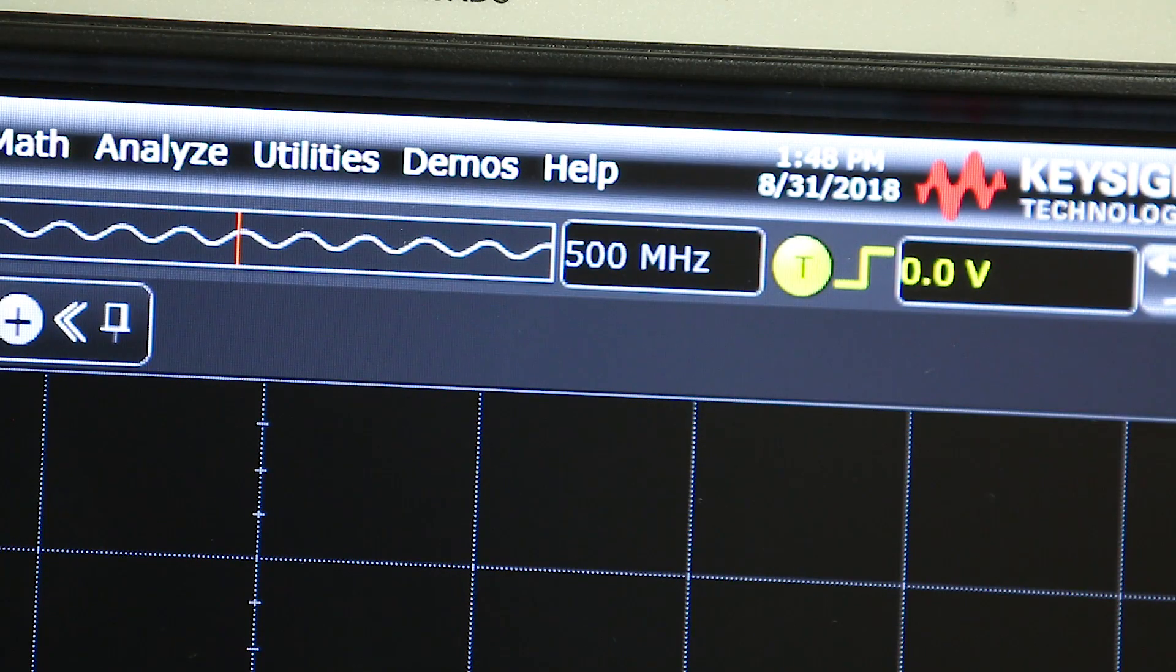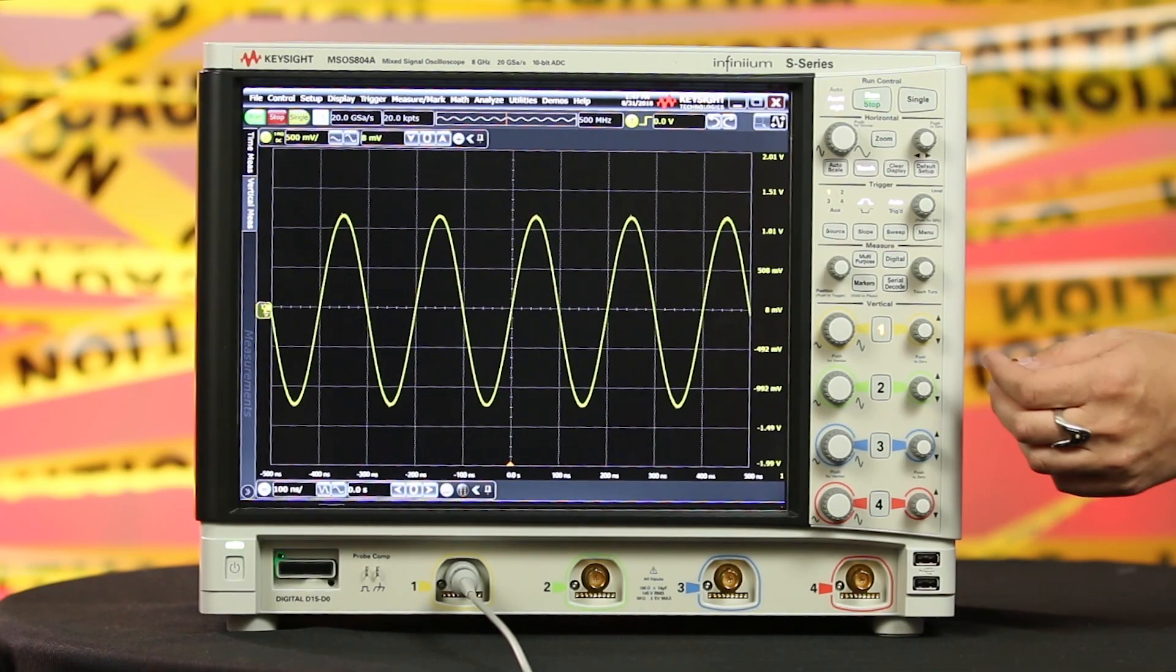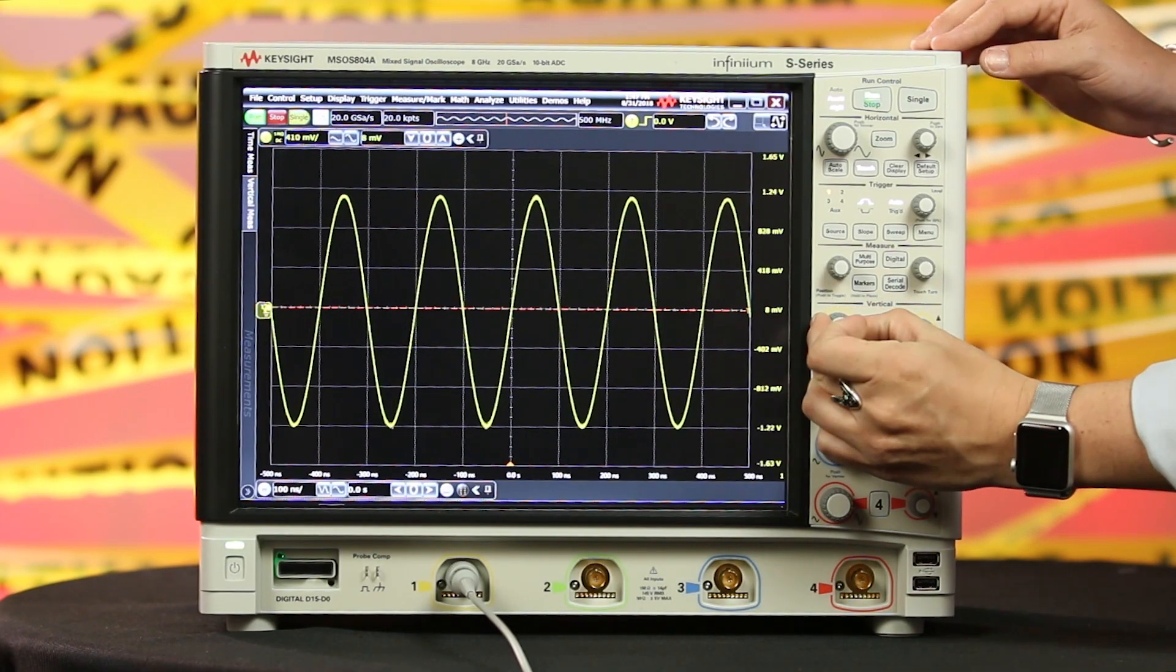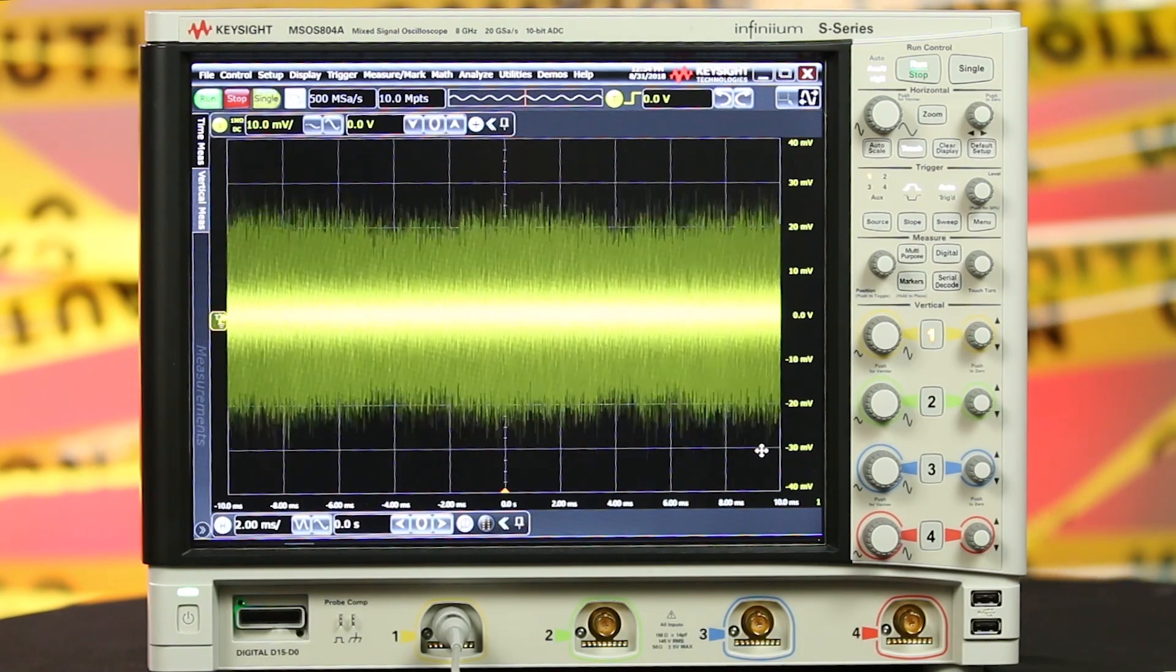To wrap up everything you learned here today, use the lowest bandwidth possible to avoid high frequency noise. Try to go with the lowest probe attenuation ratio in order to introduce the least amount of noise. Scale your signal across the entire scope screen, not just the top or just the bottom. And always test for random vertical noise.